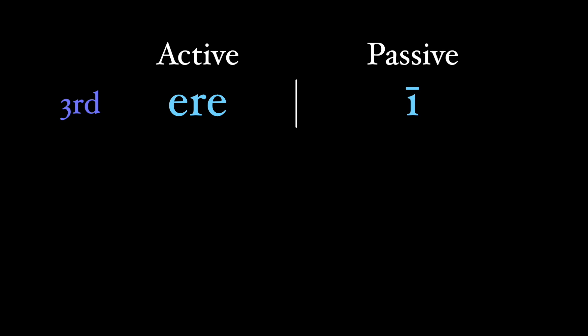But when we put this long ī onto the present stem for first conjugation verbs, we have a phonetic disconnect with the ā at the end of the stem and the passive ī ending. Laudā-ī doesn't really work. And so for the conjugations with a long vowel at the end of their stem, conjugations one, two, and four, the ī can't just replace the -re.